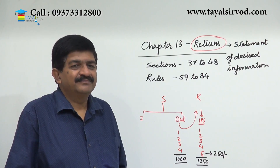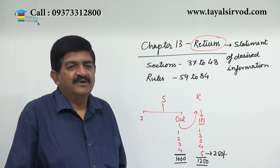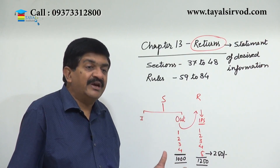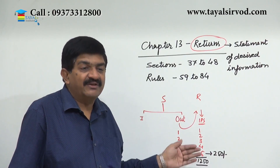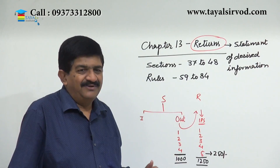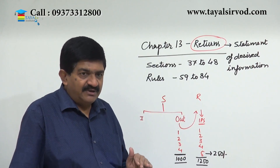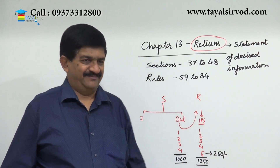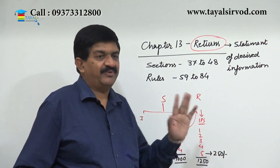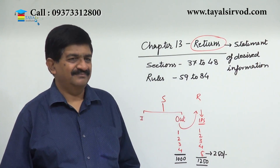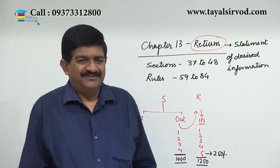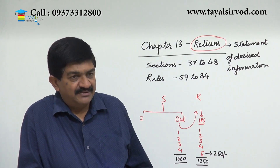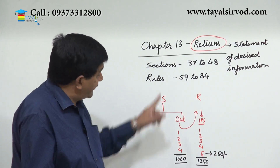Now what happens if the supplier says it is not correct — he has not made supply number five? The recipient is saying he has received the supply, the government has given him credit, and that credit is given for money which the government has not received. In that case, the credit will have to be reversed. This is done by adding it to the output liability of the recipient — which is indirectly a reversal of the credit not confirmed by the supplier.